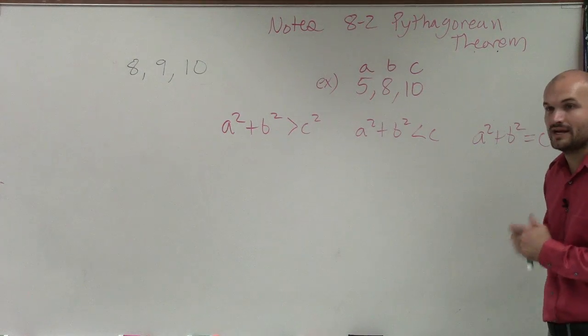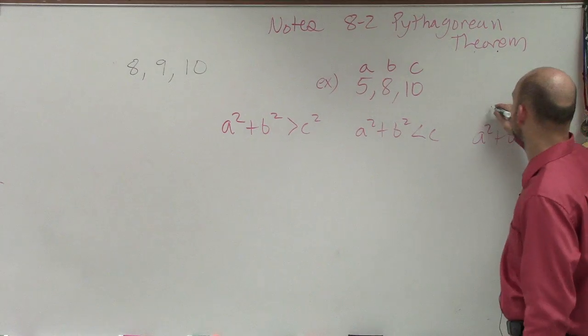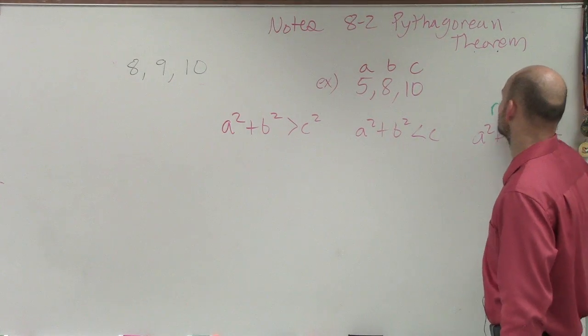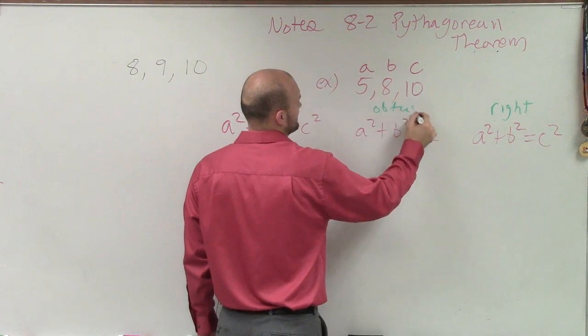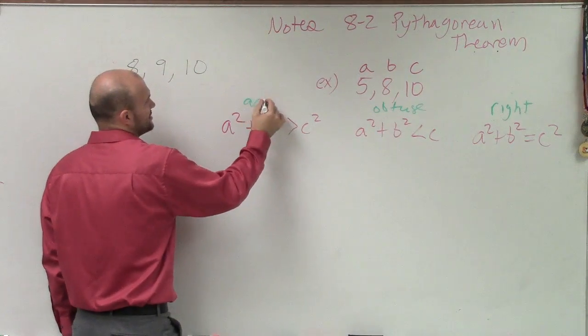Remember, if it's equal, then it's what type of triangle? Right. If it's less than? Obtuse. And if it's greater than, it's acute.